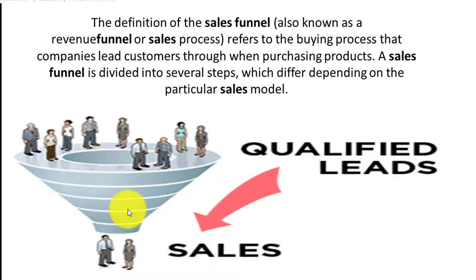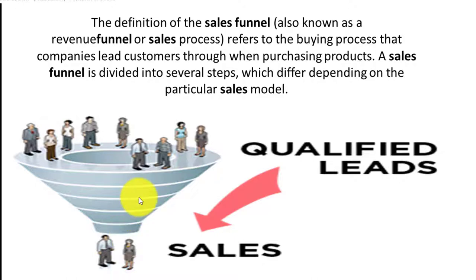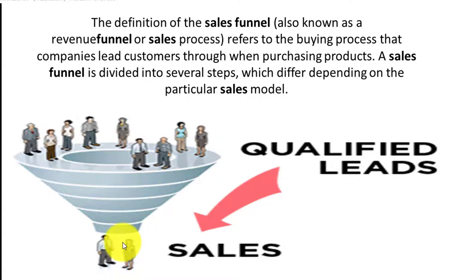For example, a $5 ad generates 10 visitors per day on our store and results in two sales. If you increase that ad spend to $10 per day, you'd see 20 visitors and the potential sales for that day would be four. So in essence, the more persons we have at the top, the better, because the probability of more sales coming out at the bottom increases.